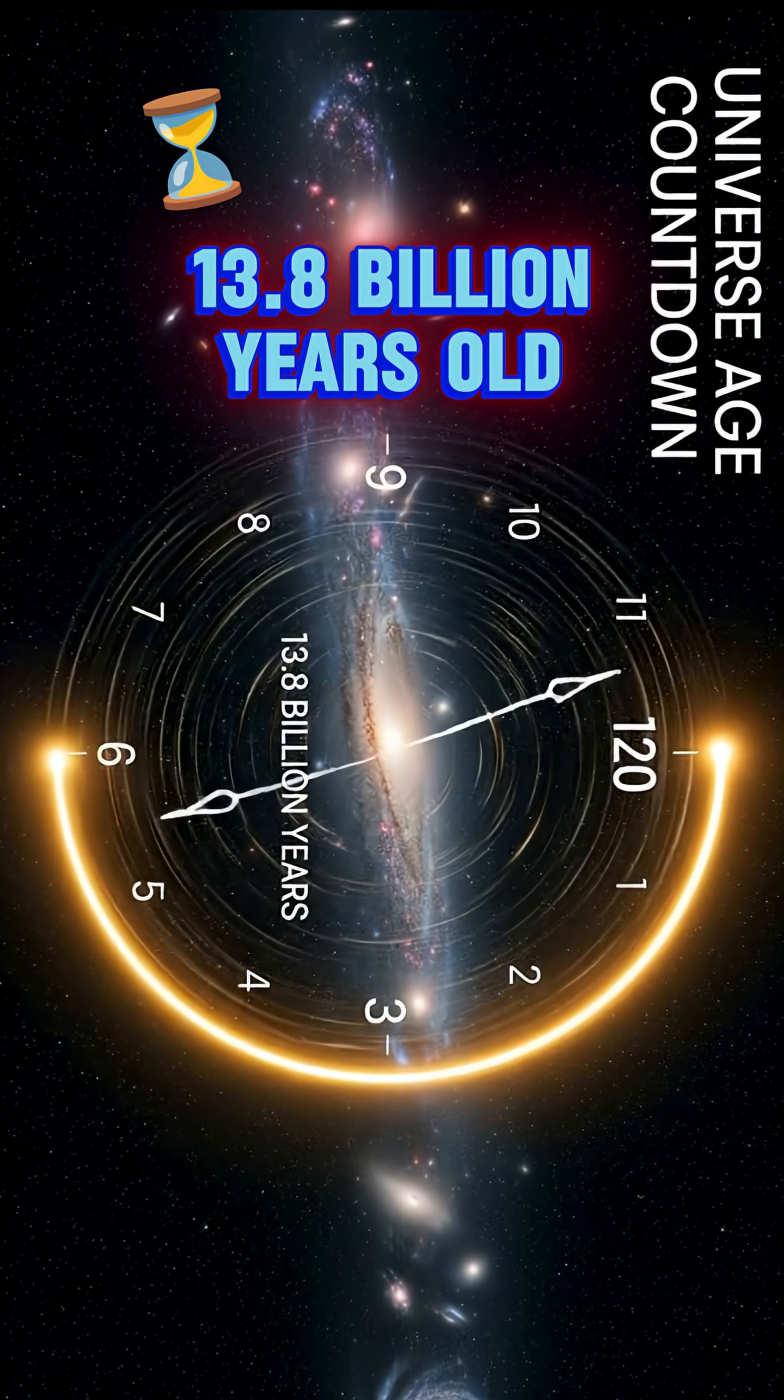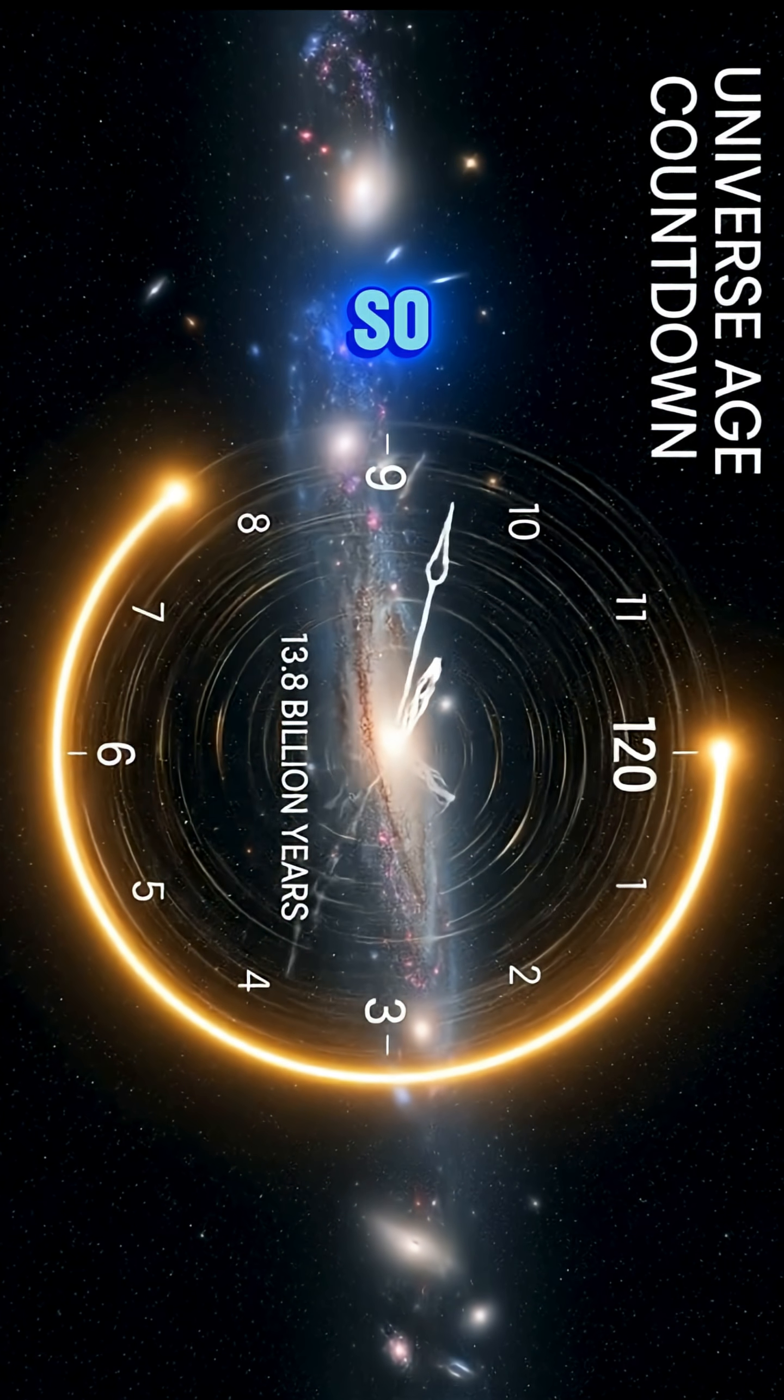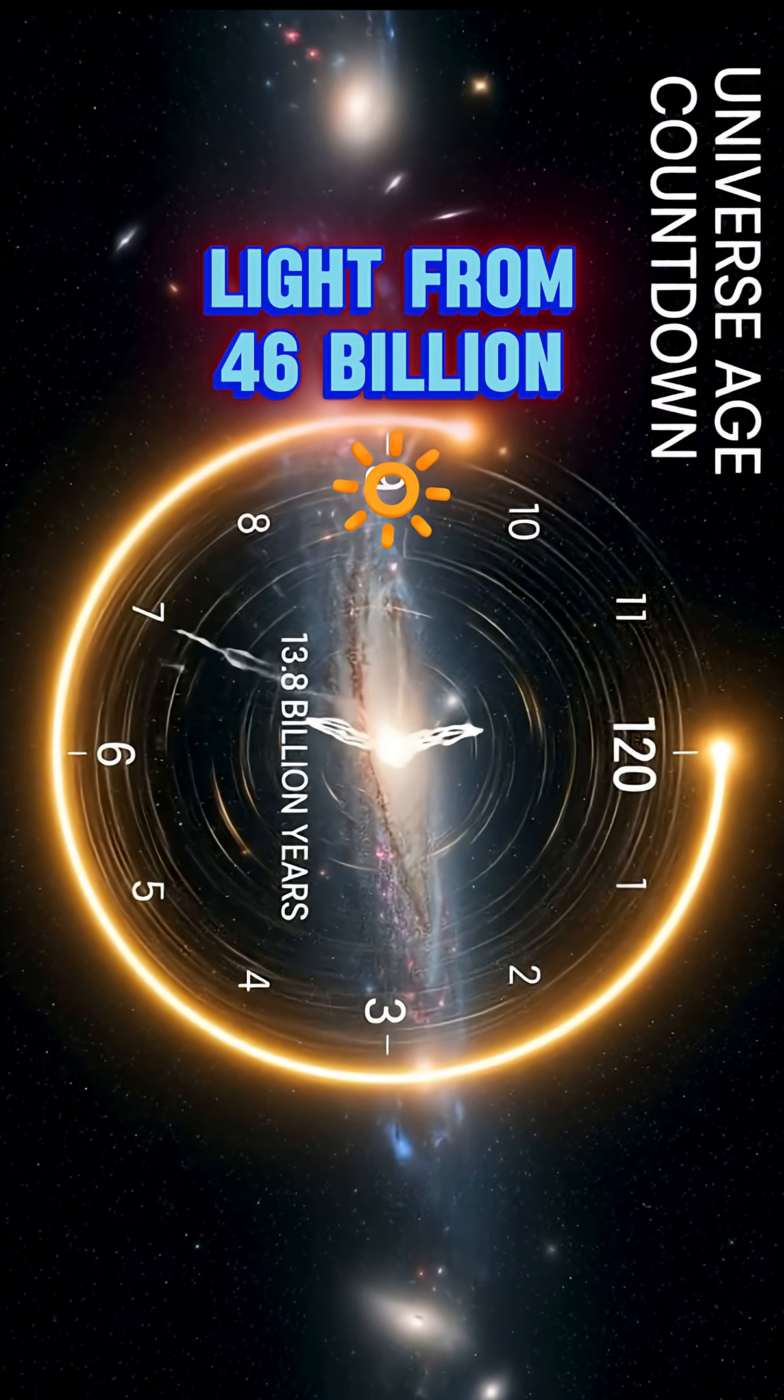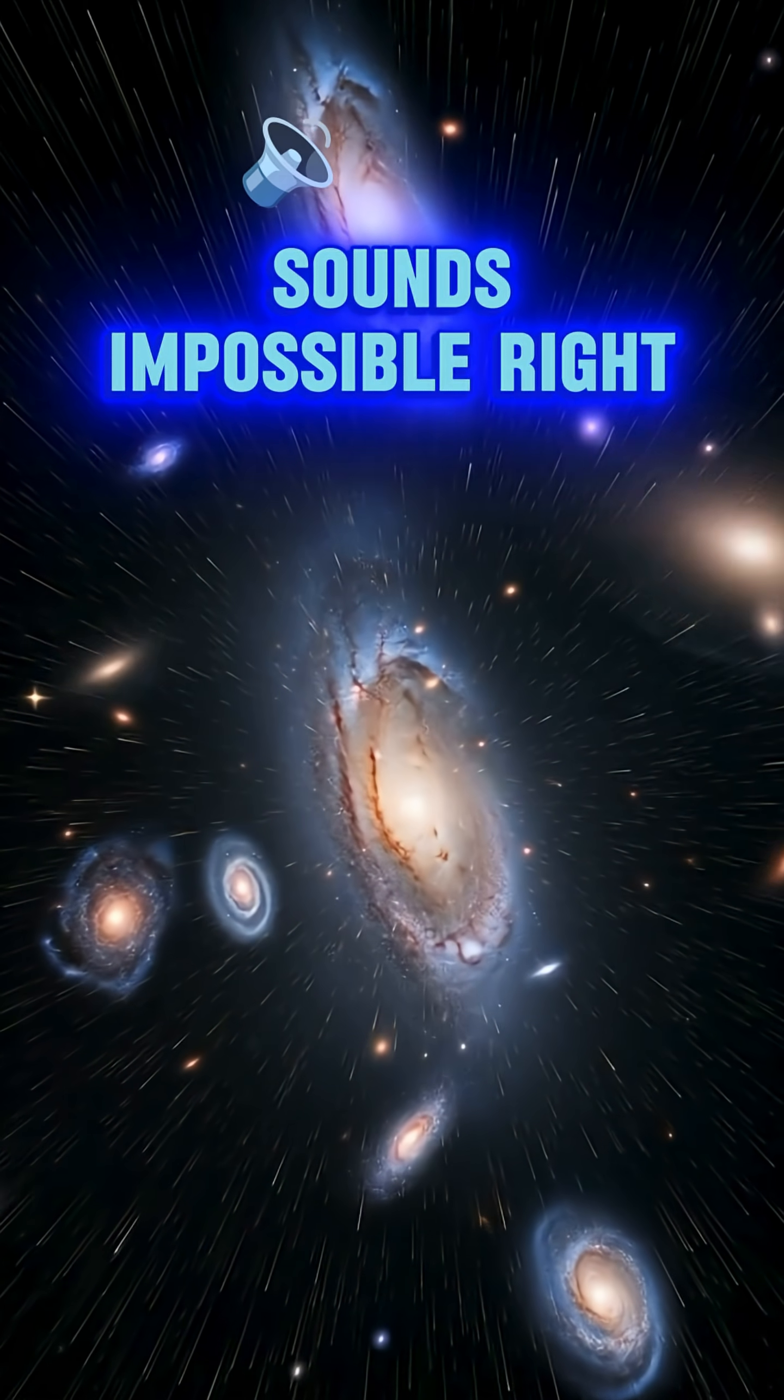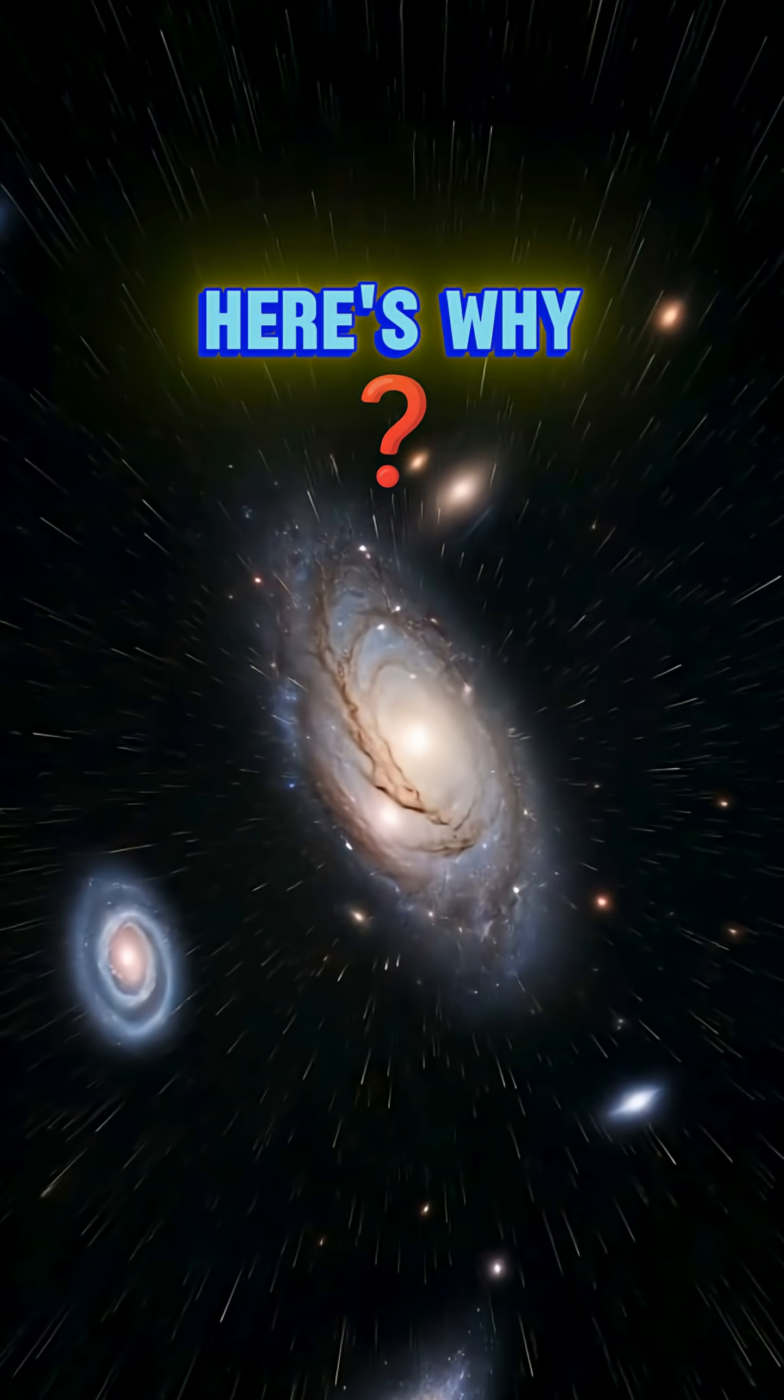The universe is 13.8 billion years old. So how can we see light from 46 billion light years away? Sounds impossible, right? But it's real. And here's why.